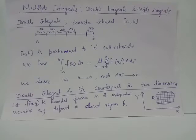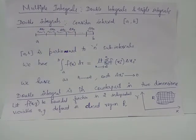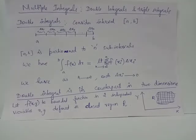f of xi multiplied by delta xi, where the interval ab is partitioned into n subintervals of length delta x1, delta x2, delta x3, and so on. When n tends to infinity, which geometrically means we are increasing the number of subintervals, the sizes of the subintervals are reduced — as n tends to infinity, the width delta xi tends to 0.